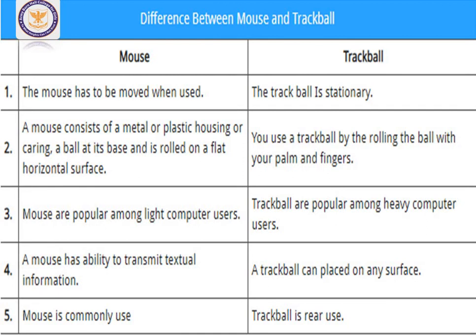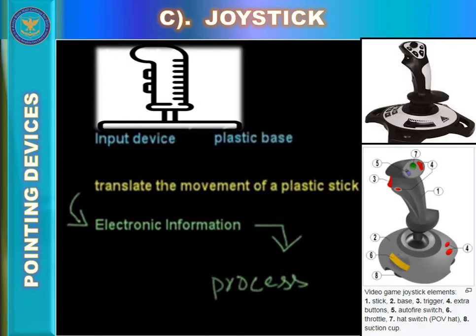A mouse is the most commonly used pointing device compared to the trackball. With that, we are done with all the concepts of the trackball — our second pointing device. Moving on to the third type of pointing device, which is the joystick. We are done with mouse and trackball; now we are going to discuss the joystick.